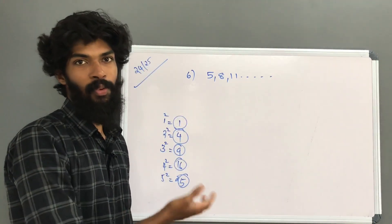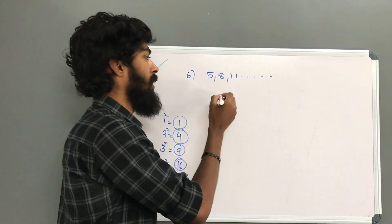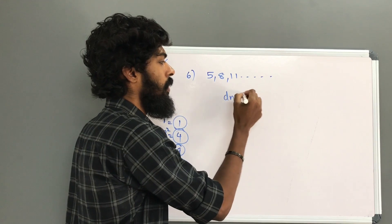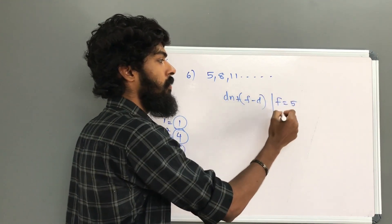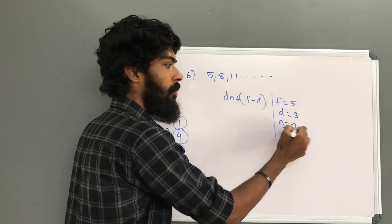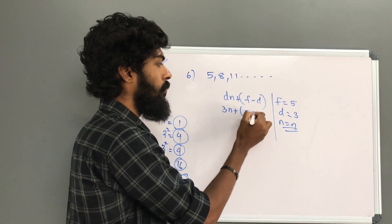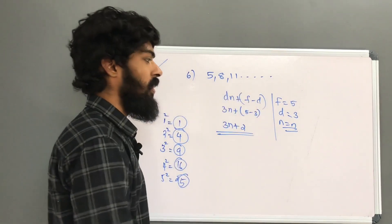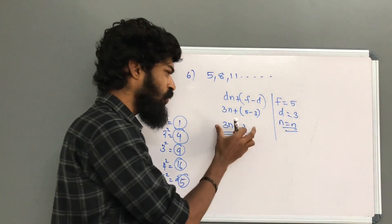Now, we will see the same expression as the following: dn plus F minus D. F is equal to 5. D is equal to 8 minus 5, which is equal to 3. We will see the same expression: 3n plus 5 minus 3 is equal to 3n plus 2.